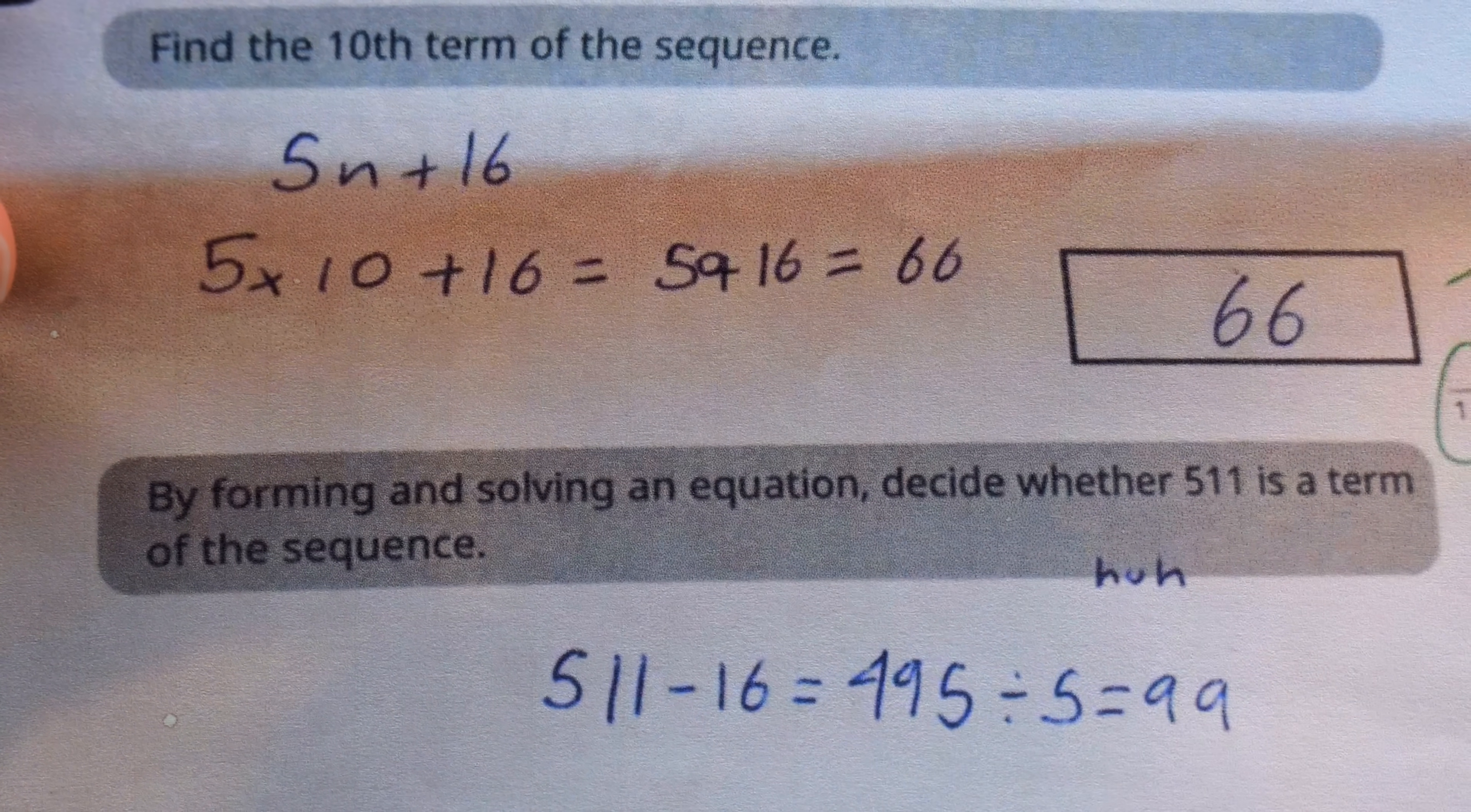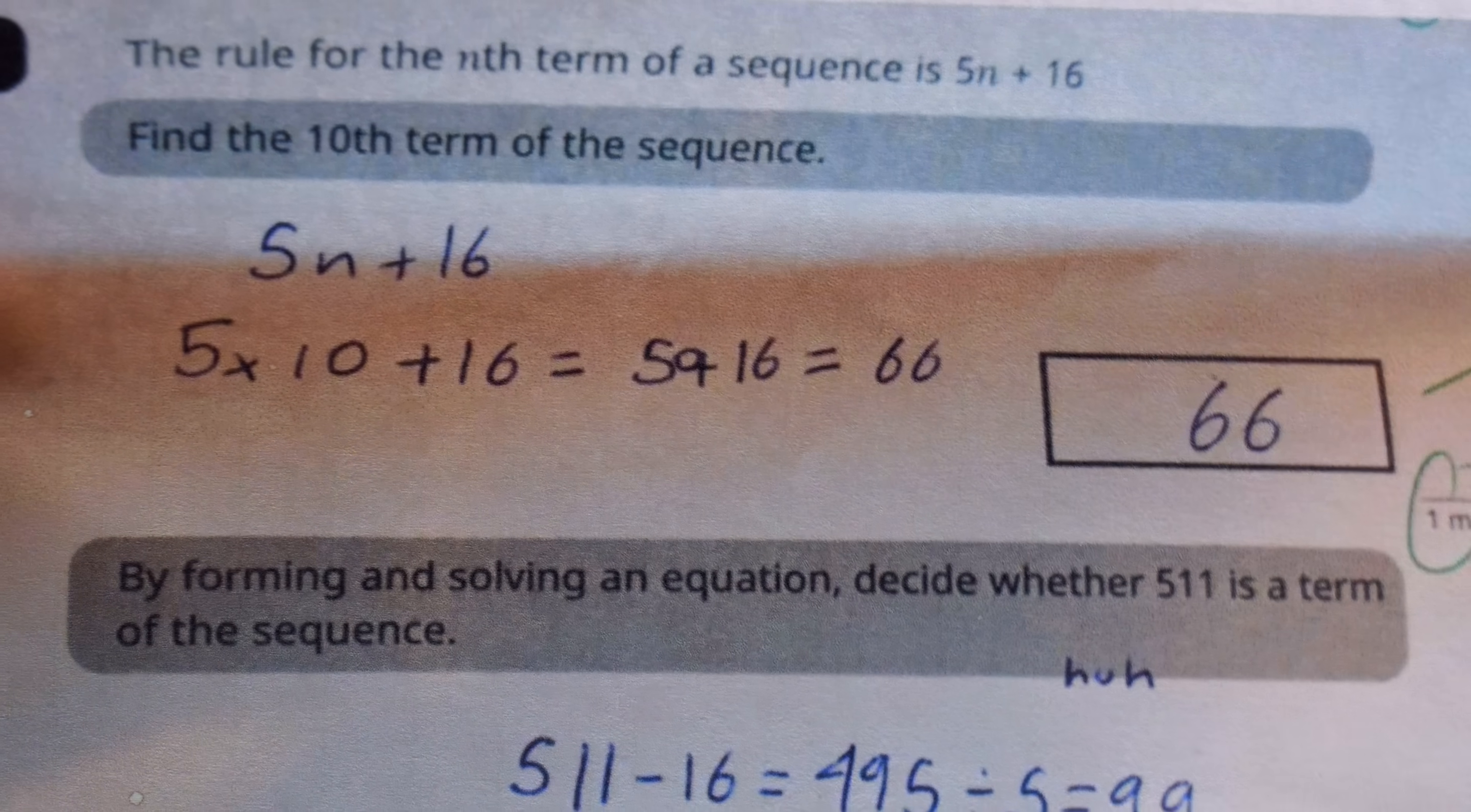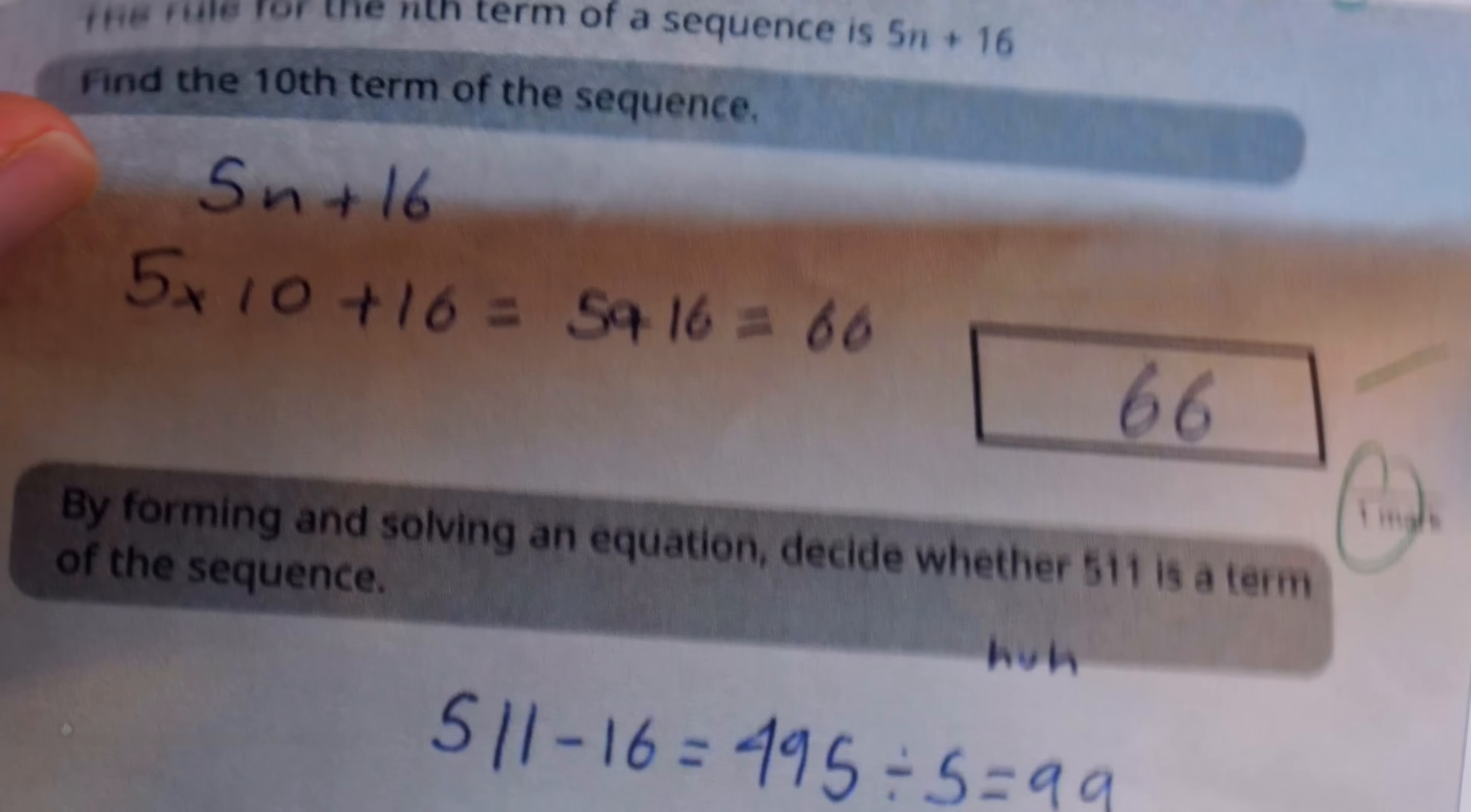But then the controversial part, this next problem: by forming and solving an equation, decide whether 511 is a term of this sequence. We know that 66 is the first term, but if we keep going, does 511 eventually come around? Let's solve this problem ourself and then we'll compare to the student's solution.